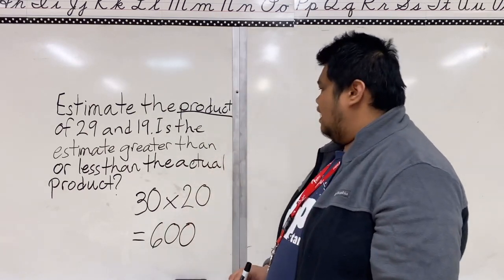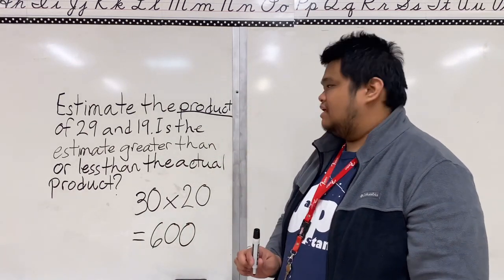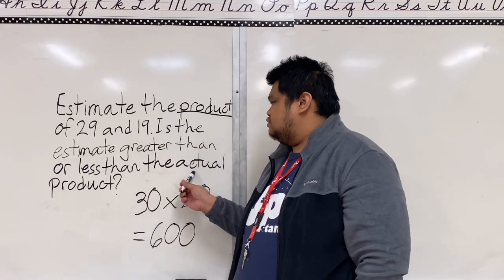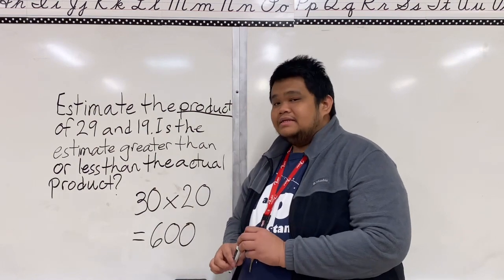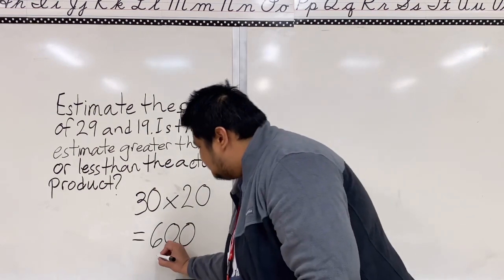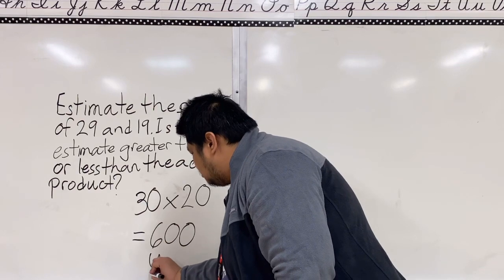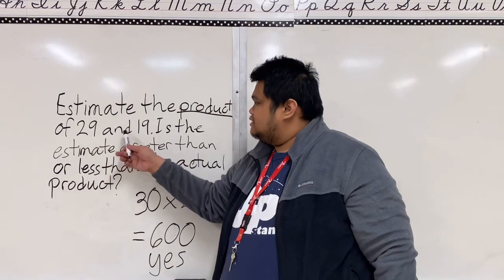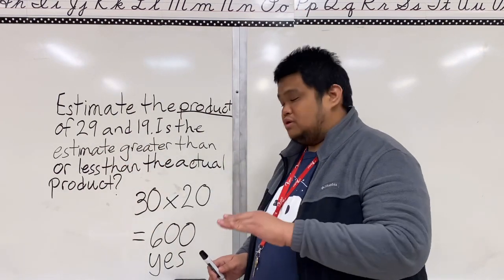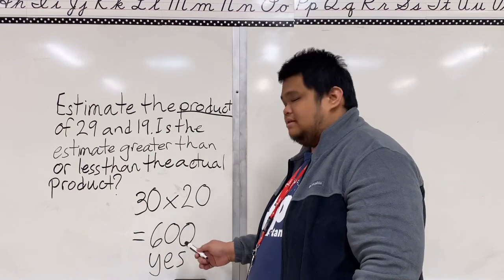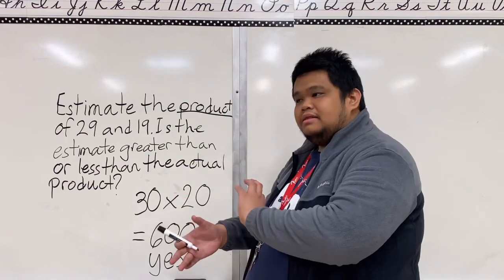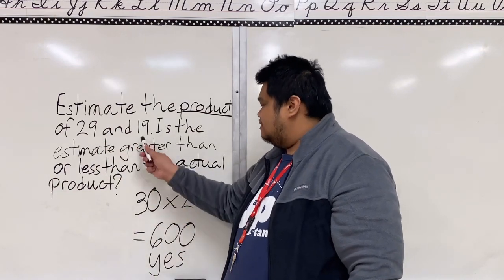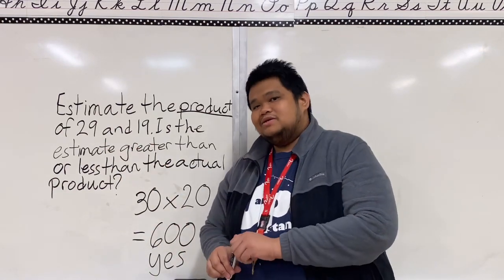30 times 20. Yes, you're right, 600. Now the question is, is the estimate greater than or less than the actual product? The answer for that question is yes. Yes, because class, if you multiply these two numbers, you will get lower results compared to 600, which we rounded off to their nearest tens - 29 to 30 and 19 to 20, much easier to multiply, right?